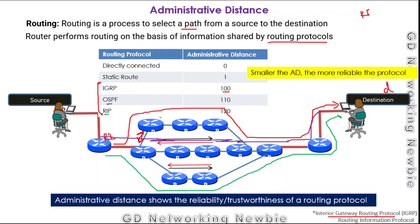We also have the static route, which is a route configured directly by the network administrator and not informed by any routing protocol. By default, a static route is given an administrative distance of 1. Directly connected network interfaces have an administrative distance of zero. For other routing protocols' administrative distance values, we can refer to the official Cisco website.